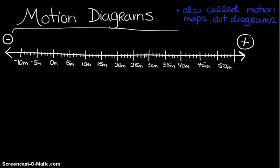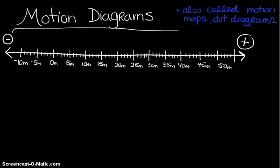The first step is we need to have a coordinate grid. Notice that we've got directions already depicted — I made to the right the positive direction and to the left the negative direction. We could have made to the left positive or to the right negative; this is just how I set up this reference frame. In the background is your basic number line, and you can see we have our zero meter mark right over here.